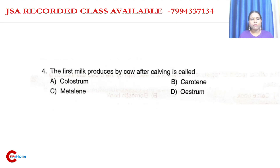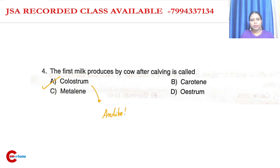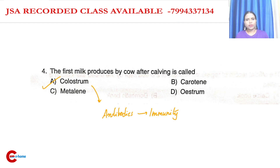Question number four: the first milk produced by a cow. The answer is colostrum. This is the antibody center, the immunity provider. First milk — colostrum.